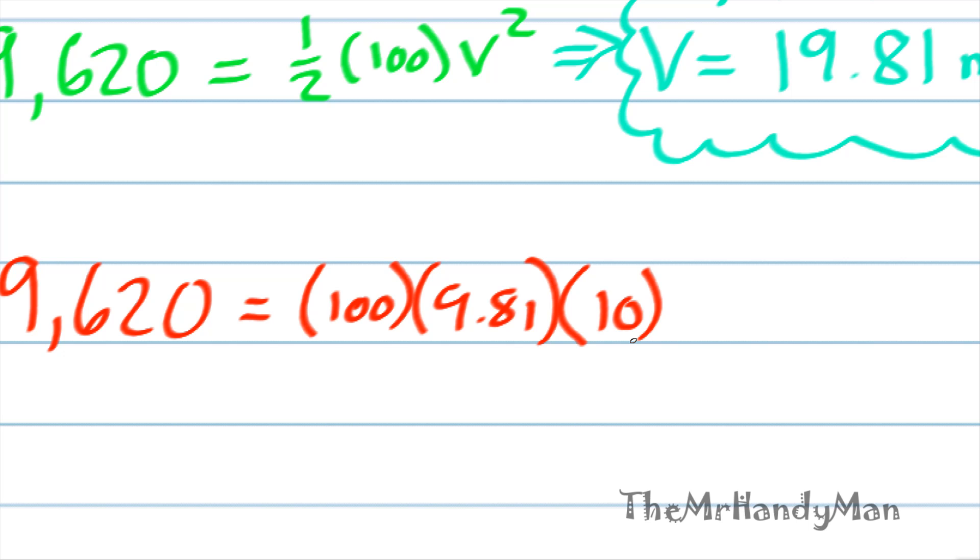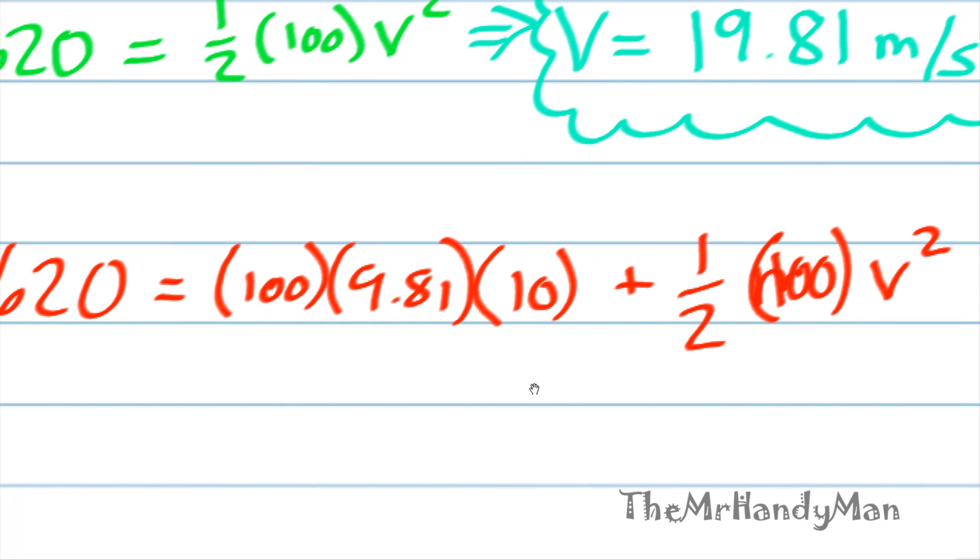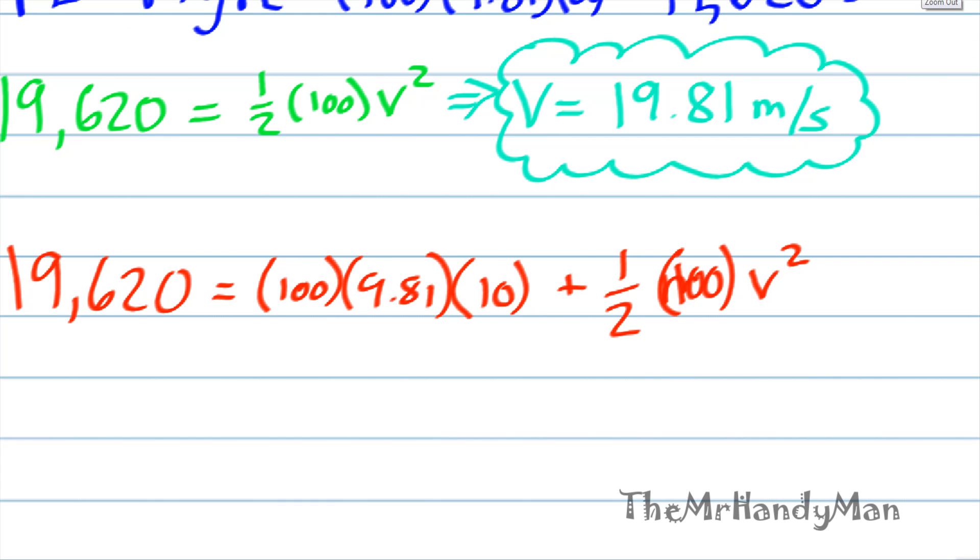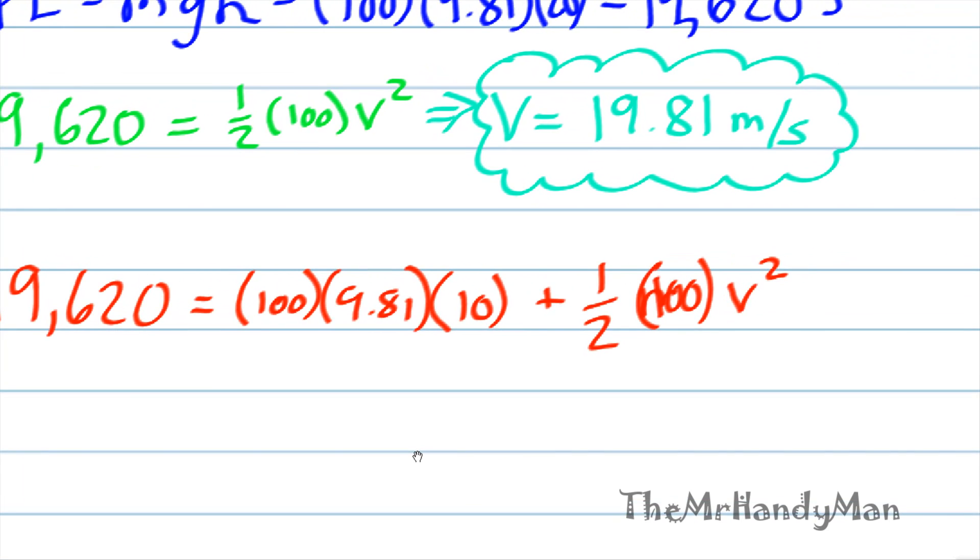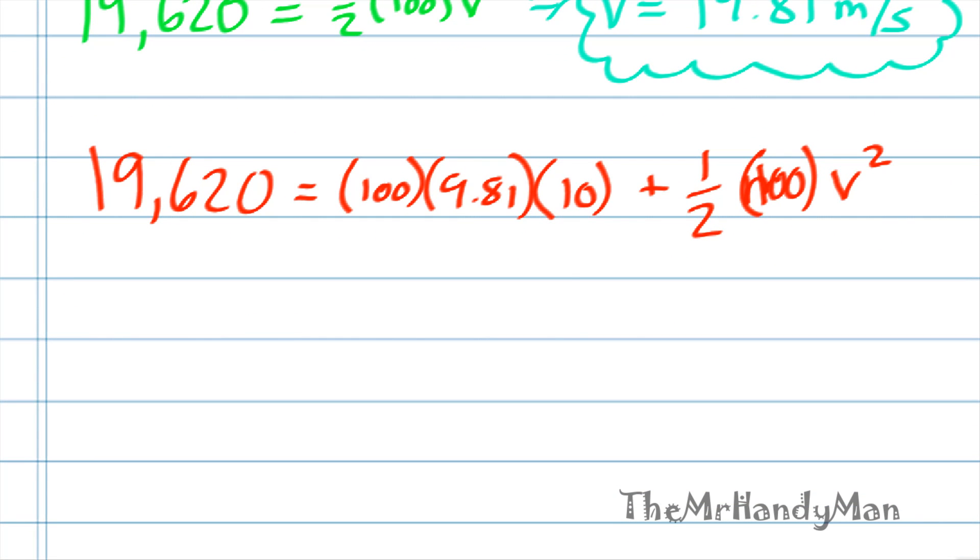And then the other portion is going to be the kinetic energy, which is going to be one half M, 100, V squared. I'm going to walk us through and do this equation. It's going to be 19,620 equals this big long equation, we're solving for V, and the result is just below here. V is equal to 14 meters per second.